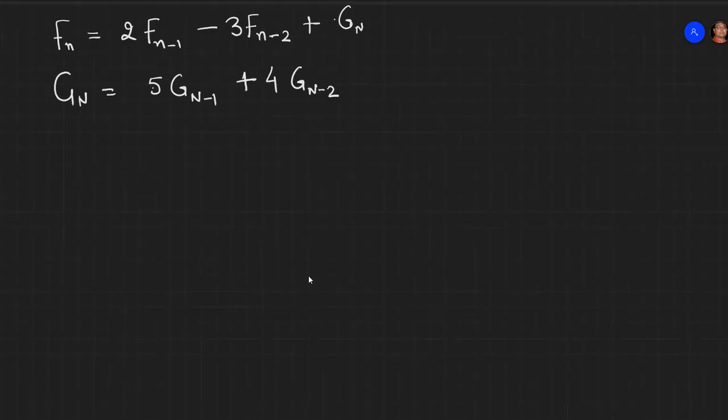Now what if we had a recurrence where there are terms which are in two recursive formulas and one recursive formula is dependent on another? So in such cases, how do we solve the problem?